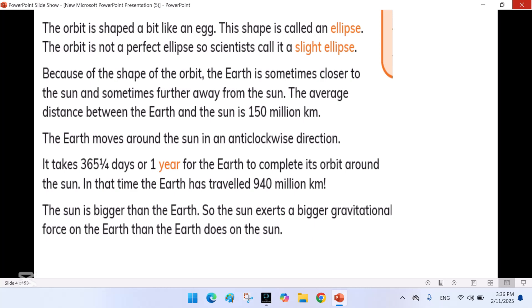The earth moves around the sun in an anticlockwise direction. It takes 365 and a quarter days or one year for the earth to complete its orbit around the sun. In that time, the earth has traveled 940 million km.